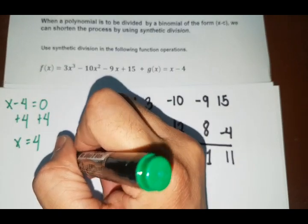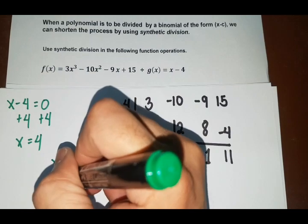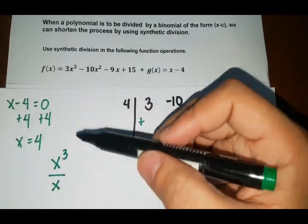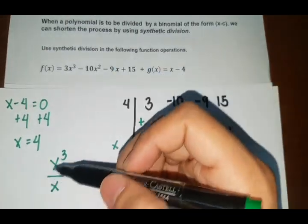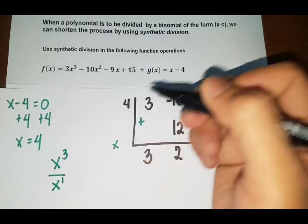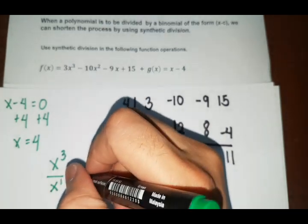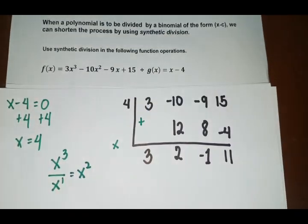So x cubed divided by x. Remember when we are dividing terms with exponent, so we are just going to subtract the exponent. So we have 1 here, 3 minus 1, so 2, so x squared. Okay.